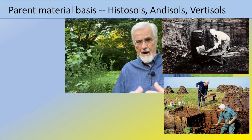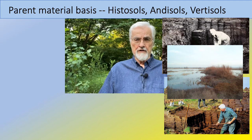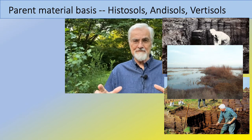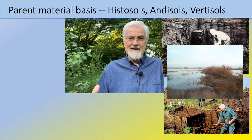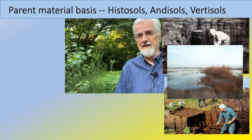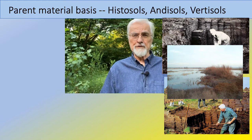Histosols tend to form in swampy areas and wetlands. Here's a photograph of the Kern County Wildlife Refuge in California — a wildlife refuge in the middle of California's vegetable production. If you drain a wetland, you'll have a histosol underneath that's quite productive. A lot of high-value vegetable production happens on histosols.